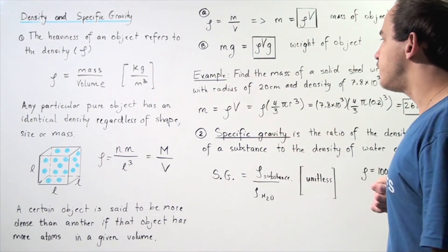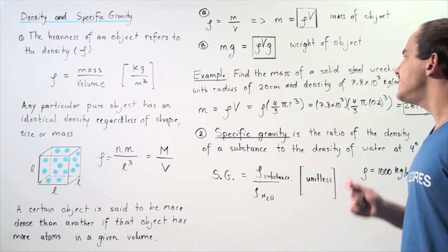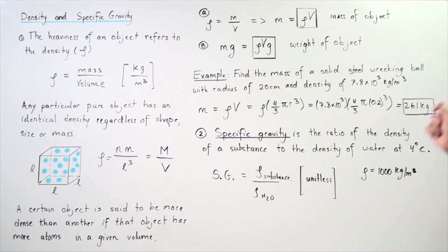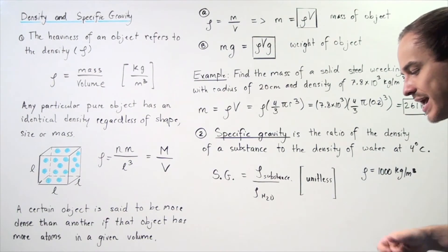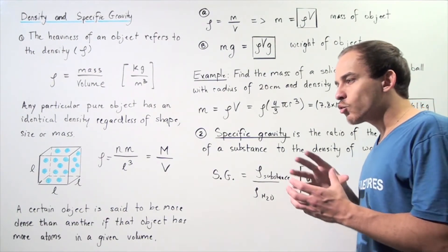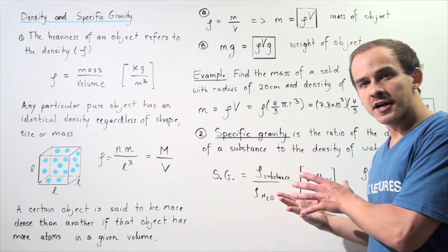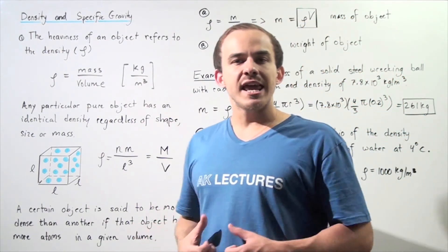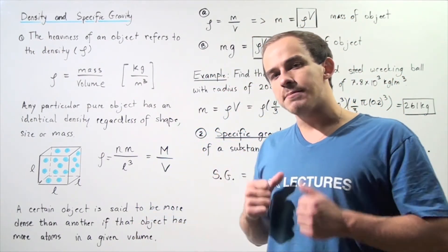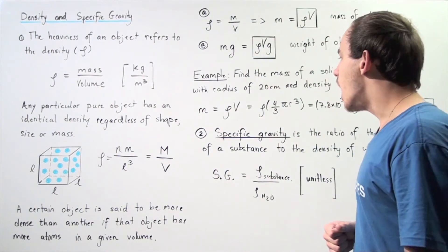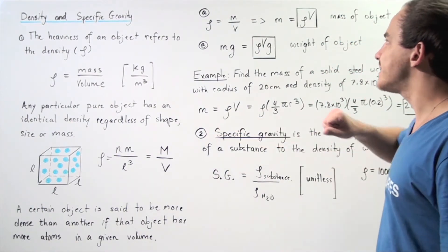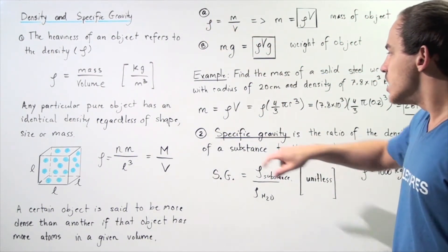Let's look at the following example. Find the mass of a solid steel wrecking ball with a radius of 20 centimeters and a density of 7.8 times 10 to the 3 kilograms per meter cubed. Using the radius of our sphere, we can calculate the volume. If we take the volume and multiply by the density, that will give us the mass as per equation A.